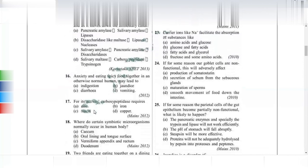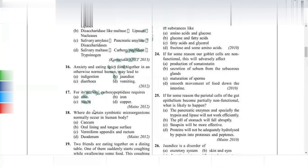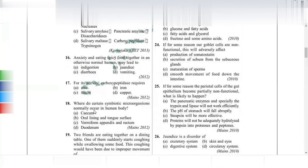For the activity of carboxypeptidase, one metal ion is required — that is zinc. Bananas have a good amount of zinc. Regarding symbiotic microorganisms, they normally occur in the cecum of the human body.